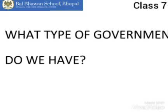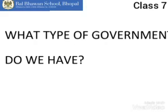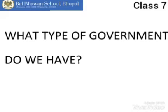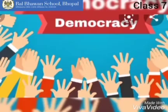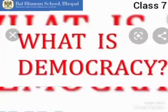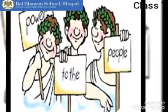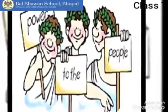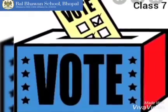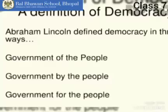What type of government do we have? Yes, democratic government. So what is democracy? Power to the people to vote. That means democratic government is a government of the people, by the people and for the people.